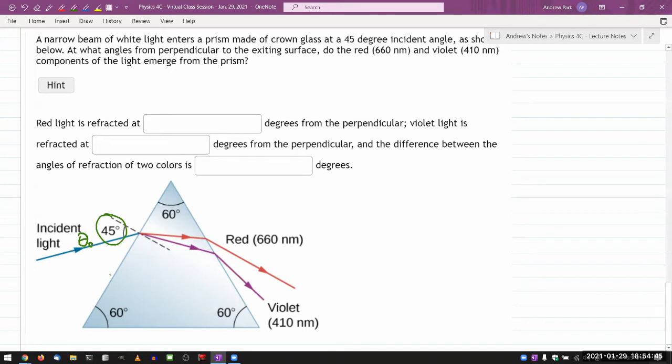At what angles from the perpendicular to the exiting surface? So let me draw those so that I have some reference. This is the perpendicular to the exiting surface. Let me label this theta R and label this theta violet. At what angles do the red and violet components of the light emerge from the prism?